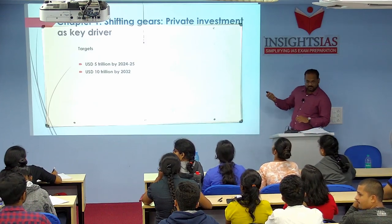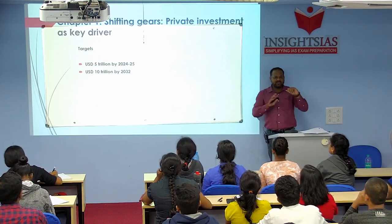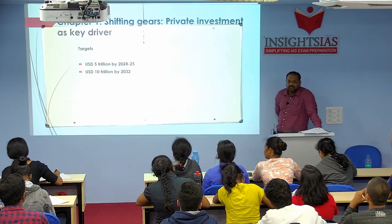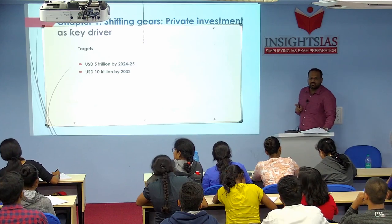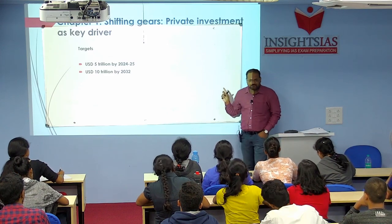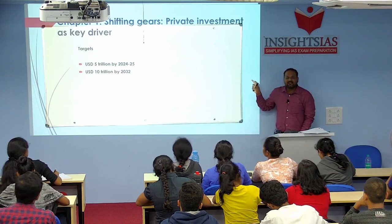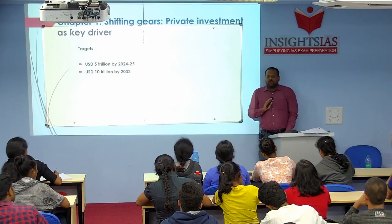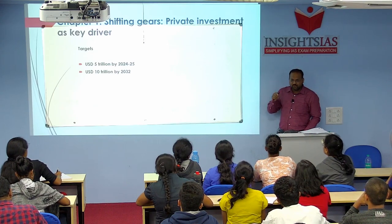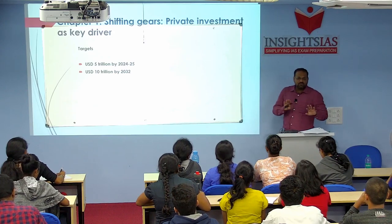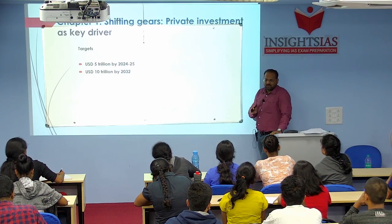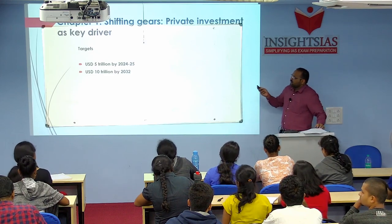Chapter 1 of Volume 1 is titled 'Shifting Gears: Private Investment as a Key Driver.' The argument is that private investment should be the key driver of growth. The chapter flow is: they set certain targets, analyze macroeconomic stability, discuss the model of economic growth needed — with private investment as a key component — and then present blue sky thinking ideas to achieve that model. Please just make running notes for your understanding; I'll provide the summary.